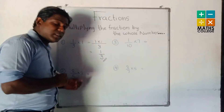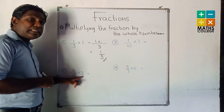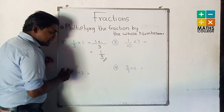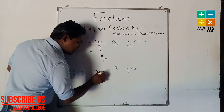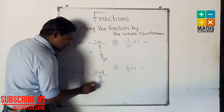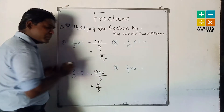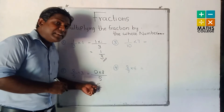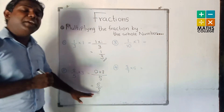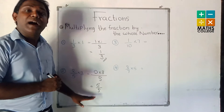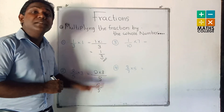Then go to the second one: 2 upon 5 multiplied by 3. The numerators are 2 and 3. So 2 multiplied by 3 upon 5 — that gives 6 upon 5. You can see here the numerator is greater than the denominator. What type of fraction? Improper fraction.